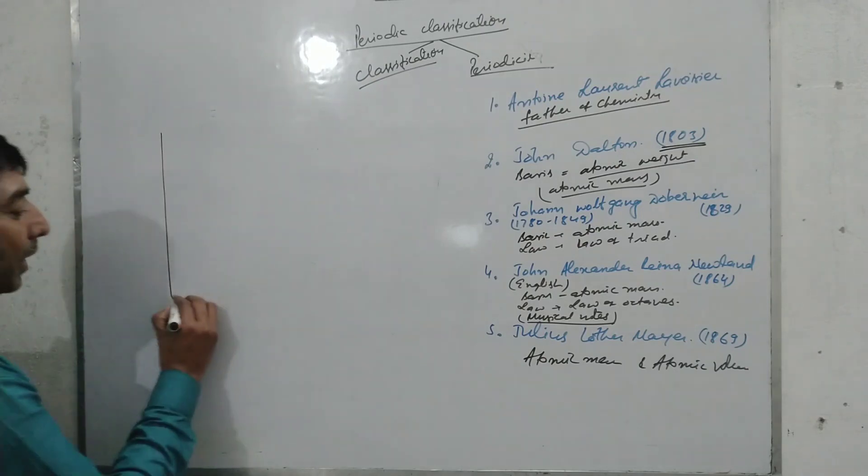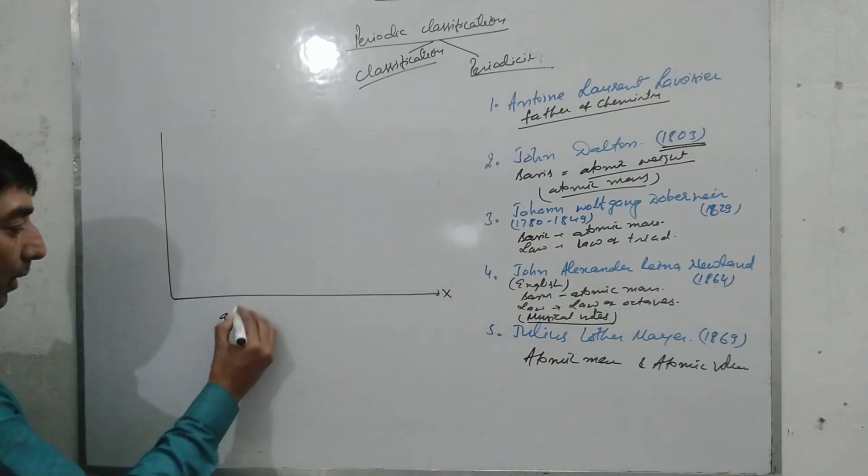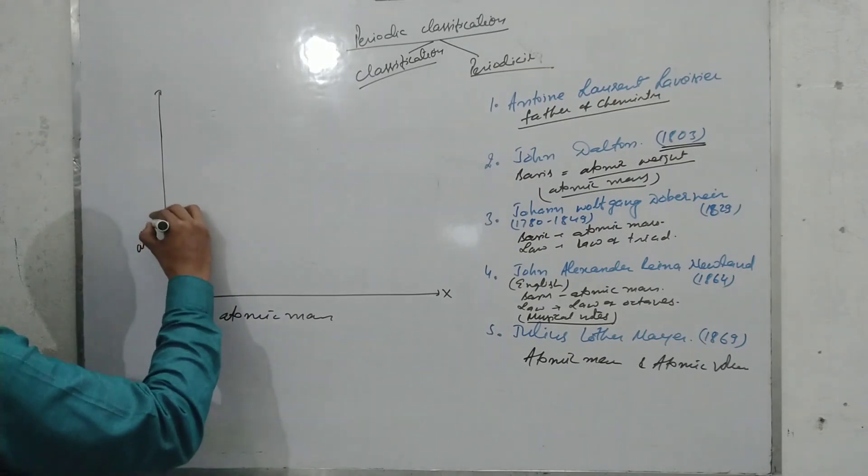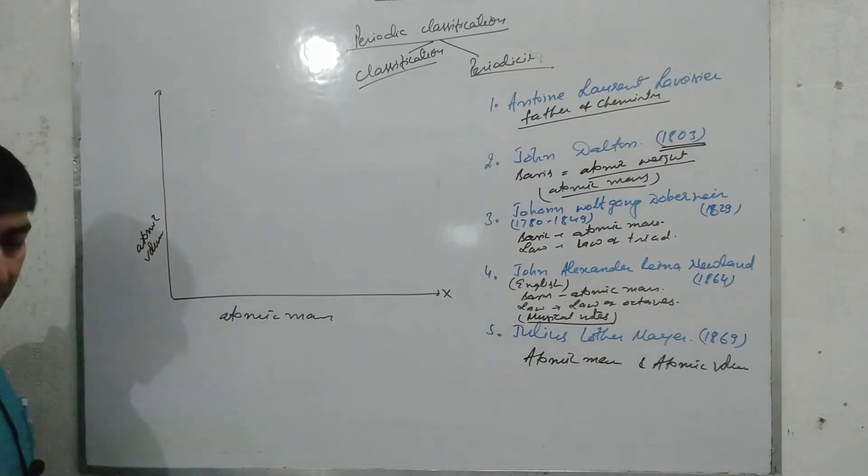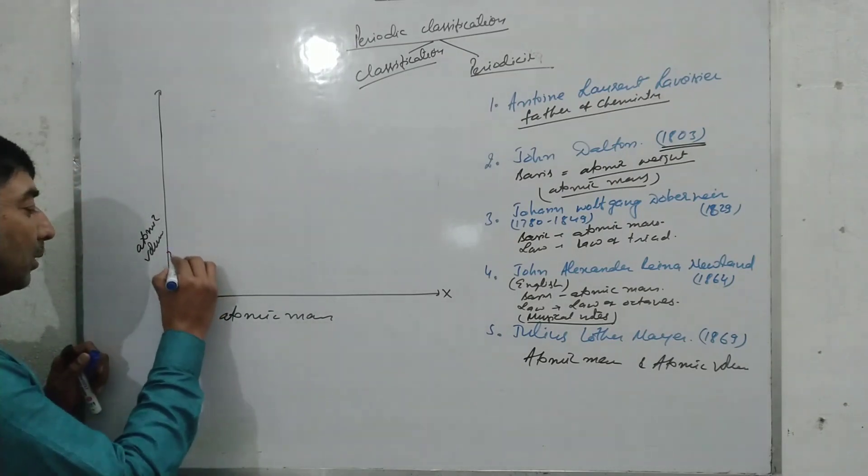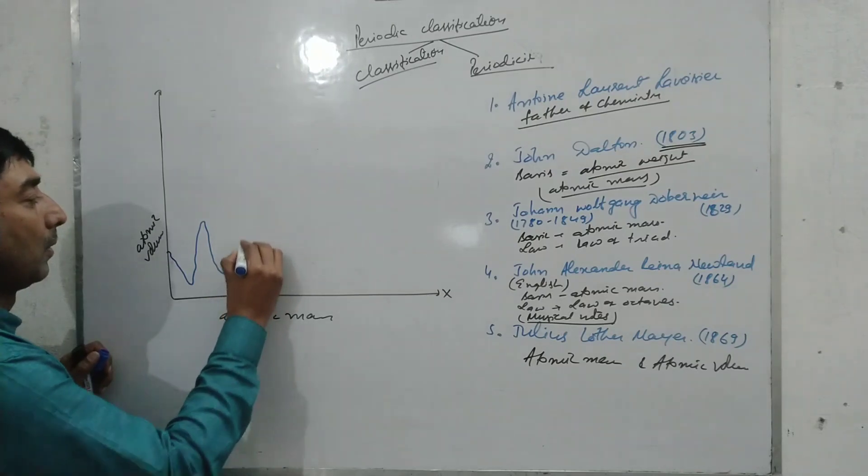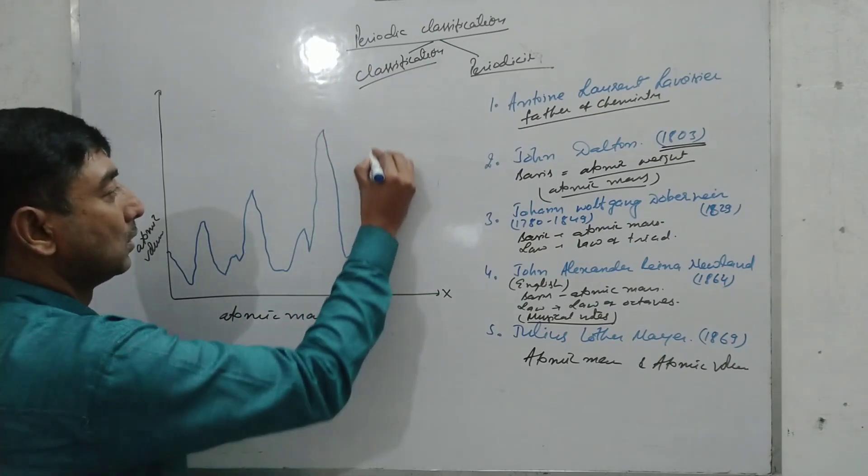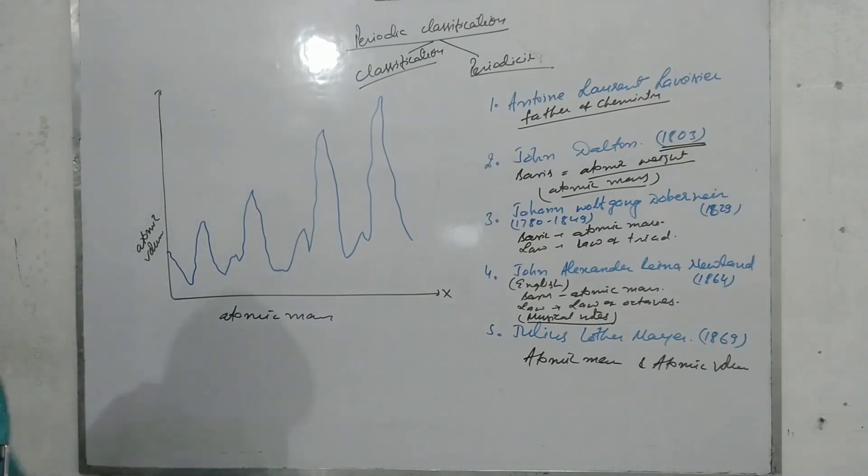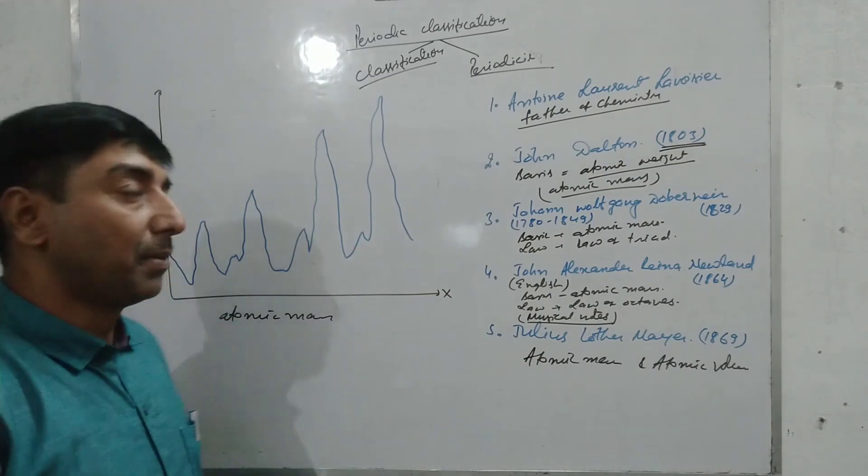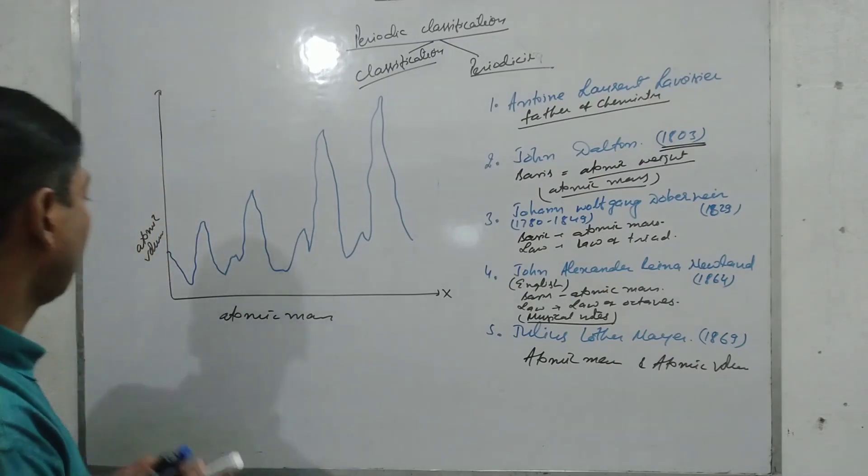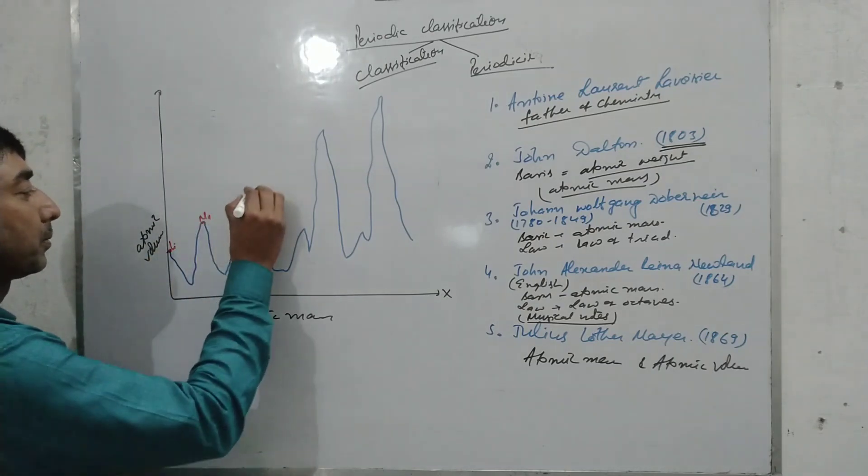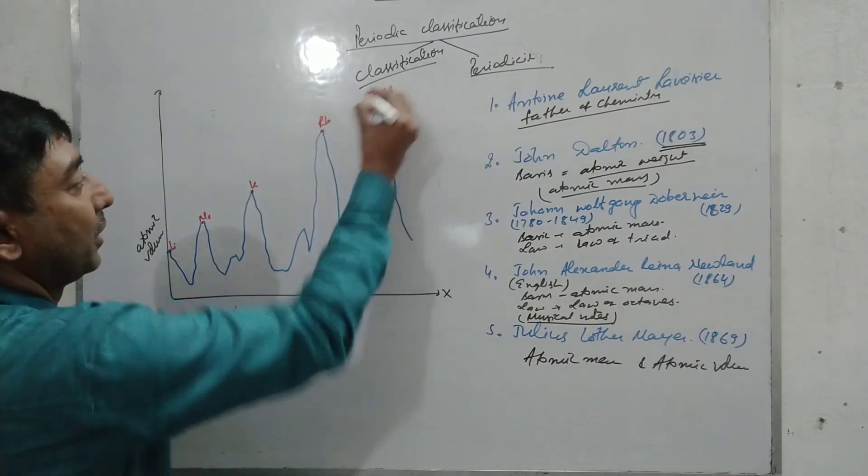According to him, at the x-axis he plotted atomic mass of the elements and on the y-axis he plotted atomic volume. When he plotted the graph, the graph shows a wave-like structure. Most electropositive elements, that is the alkali metals, occupy at the tip of the graph: lithium, sodium, potassium, rubidium, and cesium.